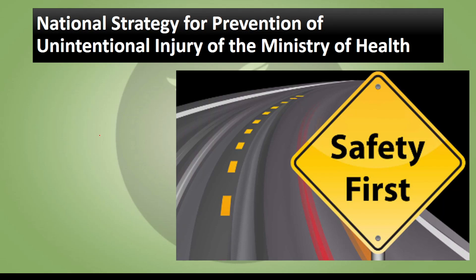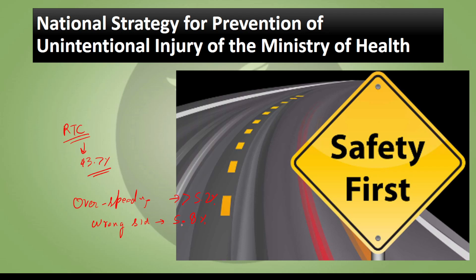The National Strategy for Prevention of Unintentional Injuries under the Ministry of Health highlights that road traffic crashes due to unintentional injuries contribute 43.7% of fatalities. Over-speeding accounts for 75.2% of deaths. Wrong-side driving accounts for 5.8% of deaths. Alcohol and drug influence is linked to about 2.5% of road traffic injury deaths.